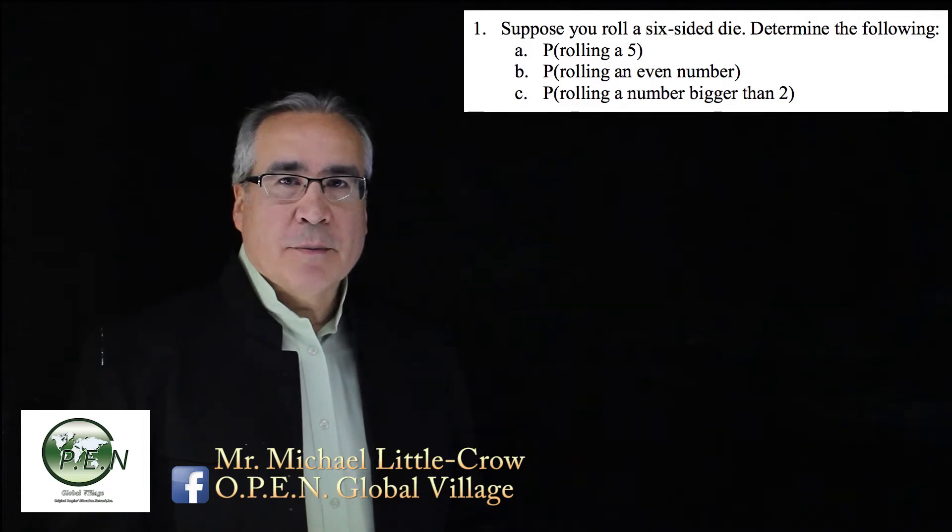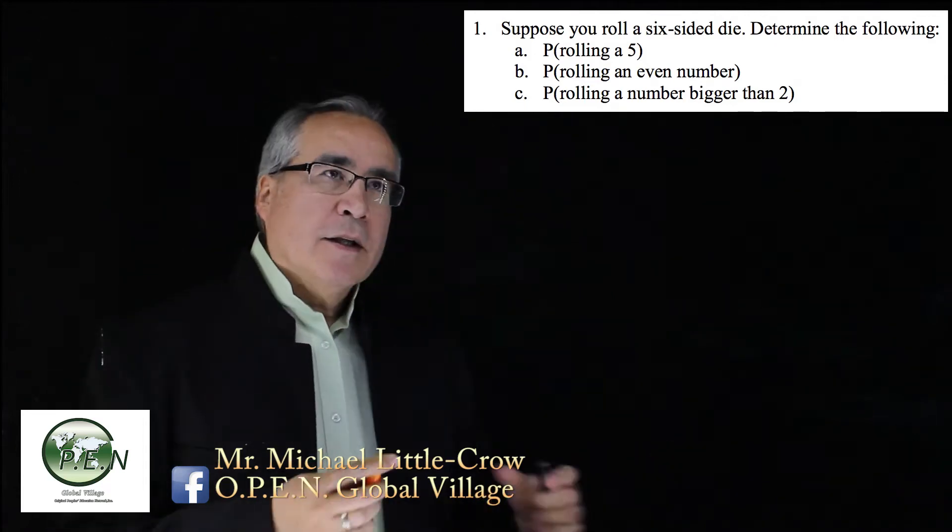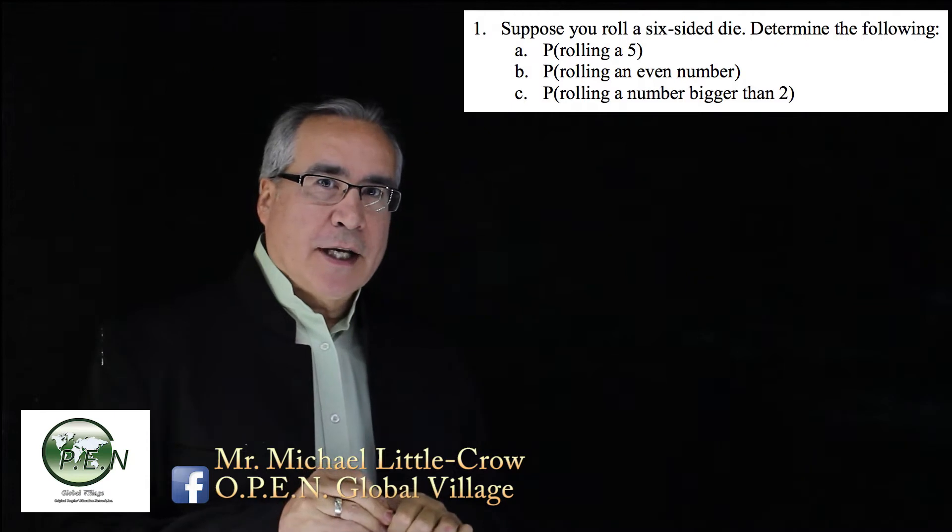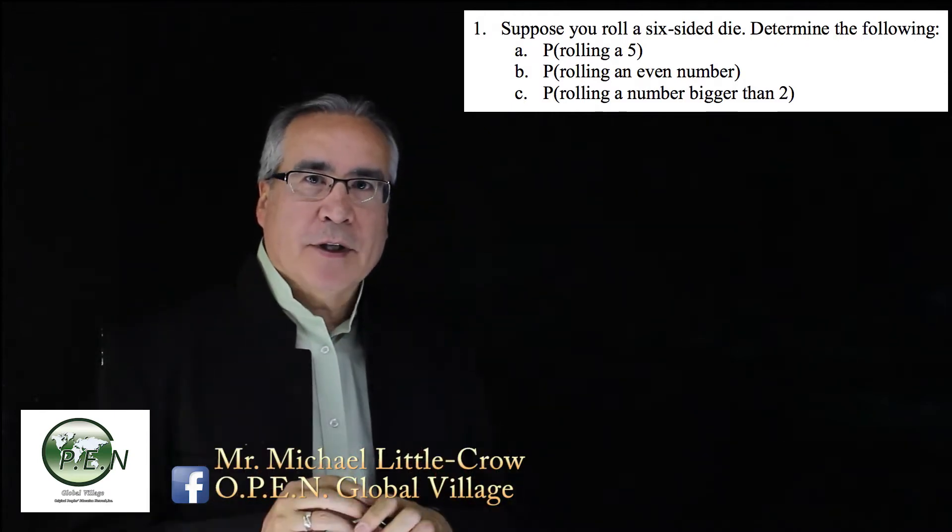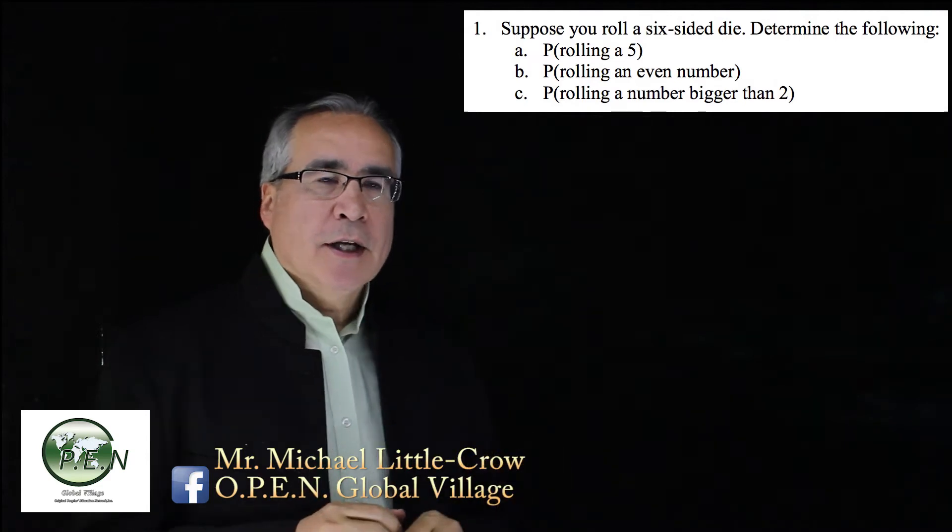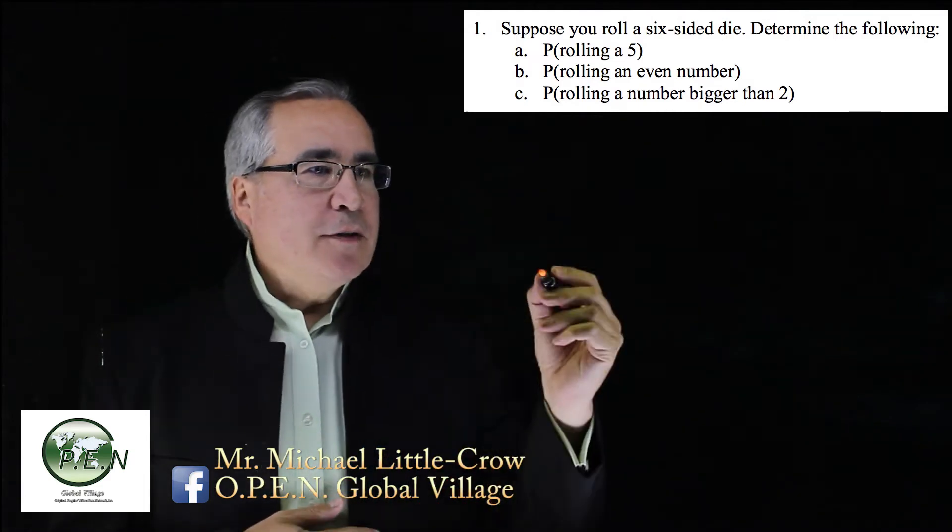Probability, question number one. Suppose we have a six-sided die with six sides, so there's six different outcomes that can happen, one through six. We have a few questions here.